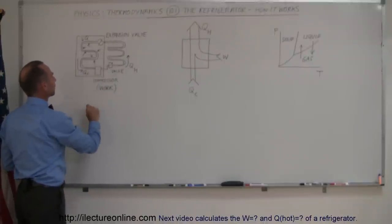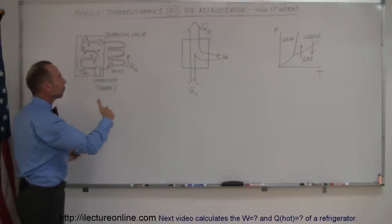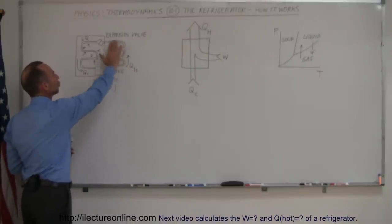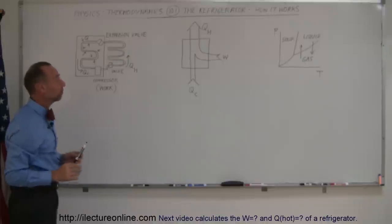Down here we have a compressor. It compresses the refrigerant into a region here where it's exposed to the outside, so air usually is blown on that. This is cooled, this is where it's being cooled, and then it gets pushed into the refrigerator, past what we call an expansion valve.